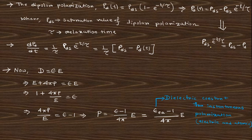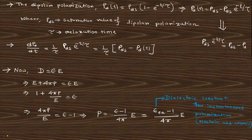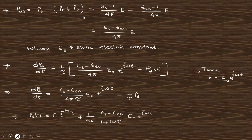The dipolar polarization decays exponentially. If you differentiate and substitute into the displacement vector equation D equals E plus 4πP, you obtain the polarization expression. Here, epsilon_Ea is the dielectric constant for the instantaneous phenomena — the electronic and atomic parts — which respond instantaneously when the field is applied, while the dipolar part takes time. Solving the resulting differential equation gives the dipolar polarization solution.